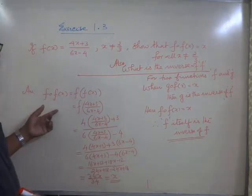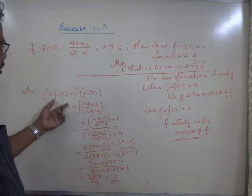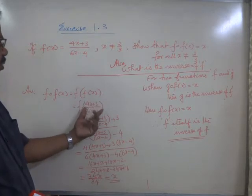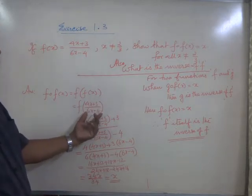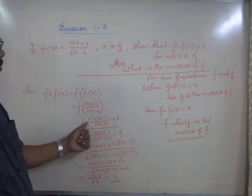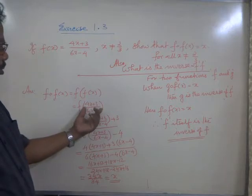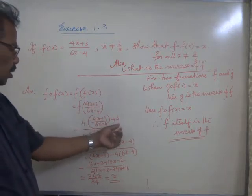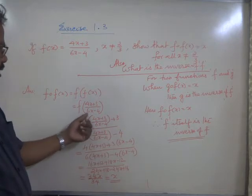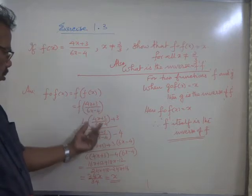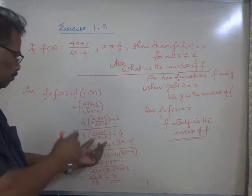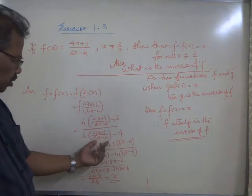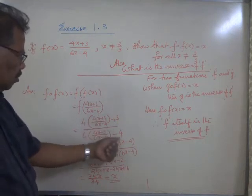Now answering the question. f(f(x)) equals f of f(x), where f(x) is (4x + 3)/(6x - 4). Now substituting this fraction into the function: 4 times (4x + 3)/(6x - 4) plus 3, all divided by 6 times (4x + 3)/(6x - 4) minus 4.